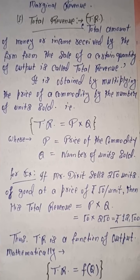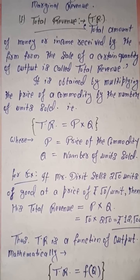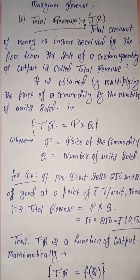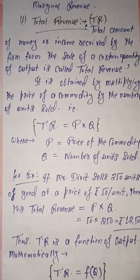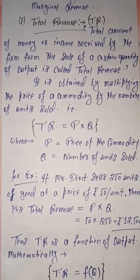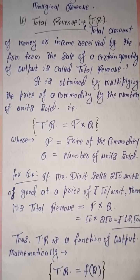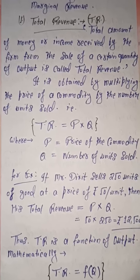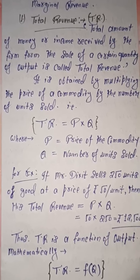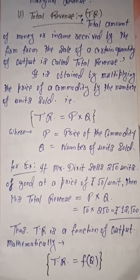It means total revenue is the multiplication of price and number of units sold. TR is equal to P into Q. This is the formula, where P is the price of the commodity and Q is the number of units sold.